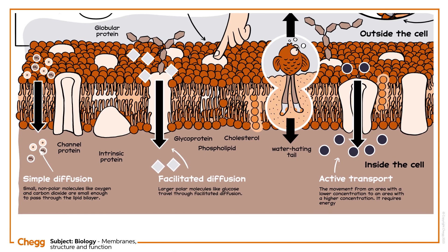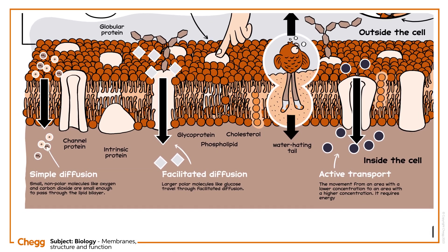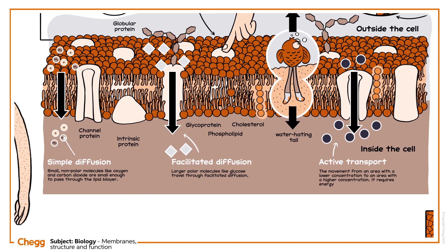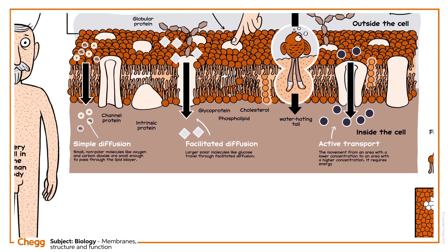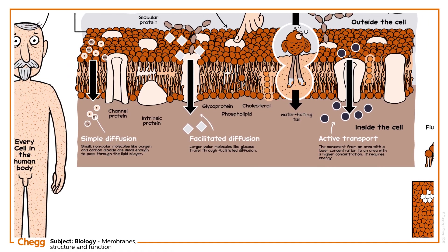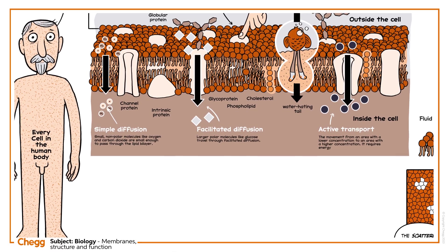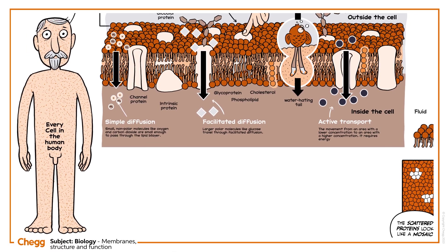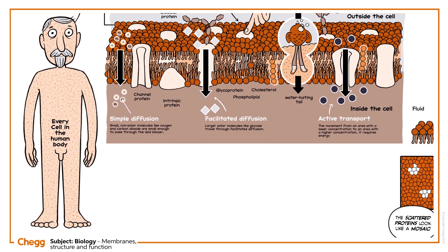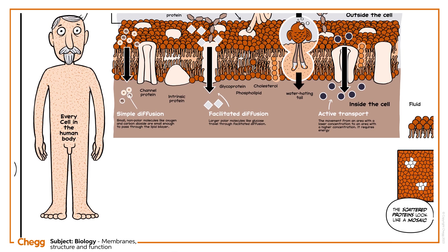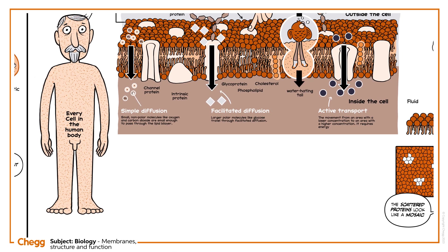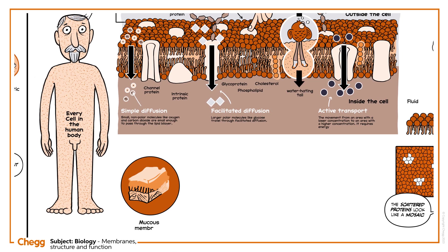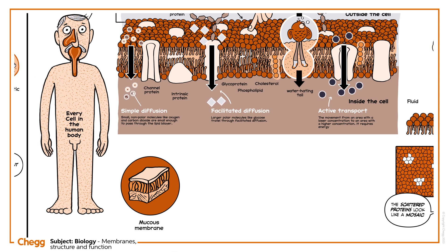So far, the membranes we've discussed are cell plasma membranes. Our bodies also contain tissues called membranes — thin sheets of epithelial tissue, bound to an underlying layer of connective tissue, that cover the body, cavities and organs. They come in four categories. Mucous membranes line passageways and chambers, like the digestive tracts.